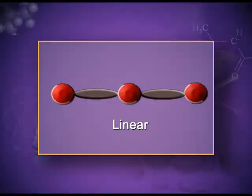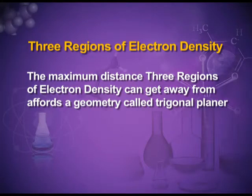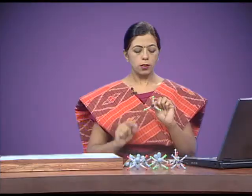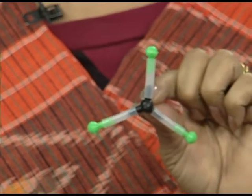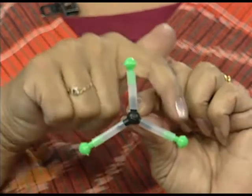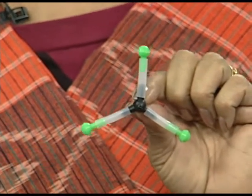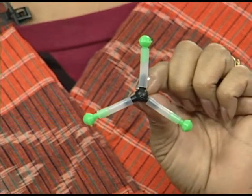For molecules containing three or more atoms, one atom is called the central atom to which other atoms are linked. For three regions of electron density, the maximum distance these regions can get from each other affords a geometry called trigonal planar. An example is BF₃ — the black atom is boron and the three green atoms are fluorine. All are bonded pairs, and to have minimum repulsion they take the shape of a trigonal planar with bond angles of 120 degrees.